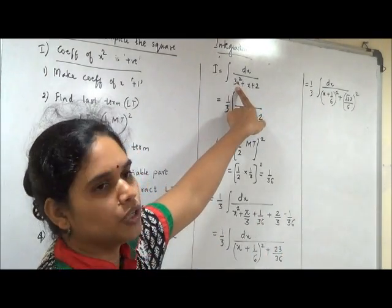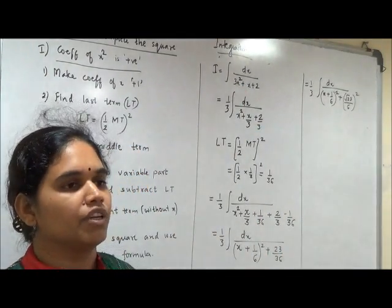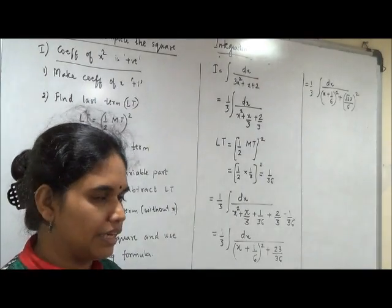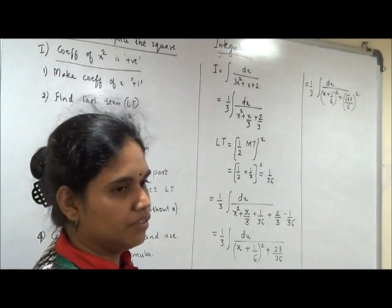This is when coefficient of x square is a positive number. Second rule will be when coefficient of x square is a negative number. Slight difference in the procedure.